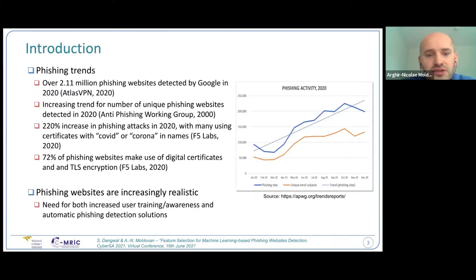According to some recent trends on phishing, especially on website phishing, Google has registered over 2.11 million phishing websites in 2020. As per the Anti-Phishing Working Group, which provided this nice statistic, there is an increasing growing trend in the number of detected phishing websites. In the beginning of January 2020, there were less than 100,000, but in December 2020, there were around 200,000 phishing websites detected. Especially since the pandemic had started, we've seen a huge increase in phishing attacks.